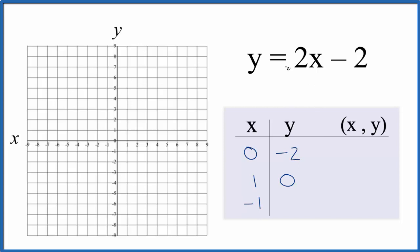And how about negative 1? 2 times minus 1, that's minus 2, plus minus 2, so we get minus 4. So these are the points that we'll graph for the equation y equals 2x minus 2.